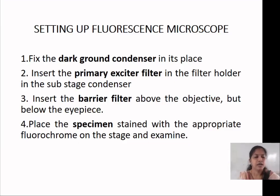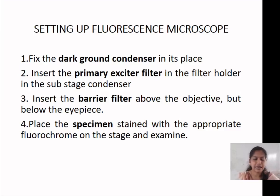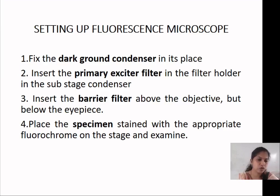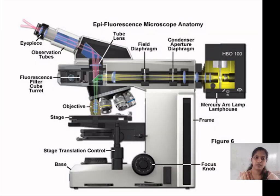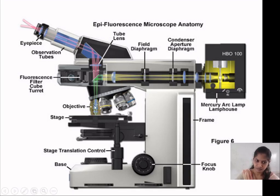Setting up the fluorescence microscope: first, we have a darkground condenser and a primary exciter filter that allows only ultraviolet rays. A barrier filter removes unwanted ultraviolet rays to protect the eyes from direct UV exposure. The specimen is stained with an appropriate fluorochrome — for example, mycobacteria use auramine O fluorochrome, and Bacillus anthracis appears as a fluorescent object.